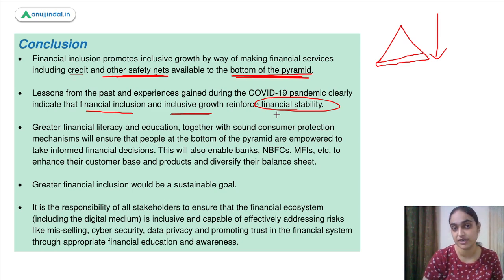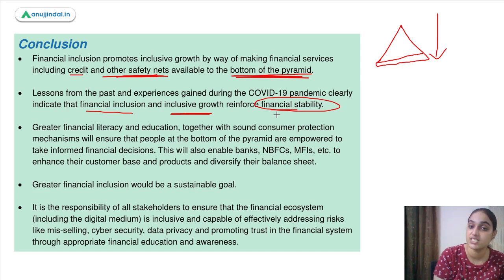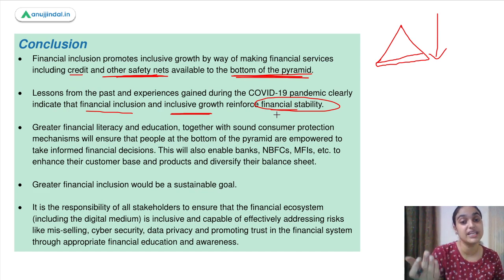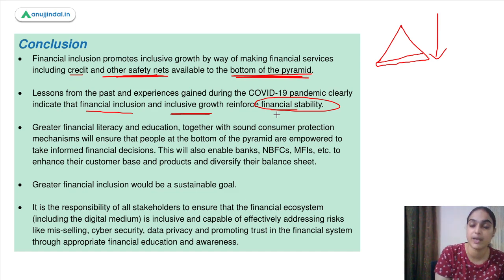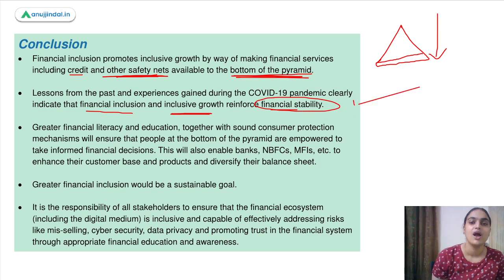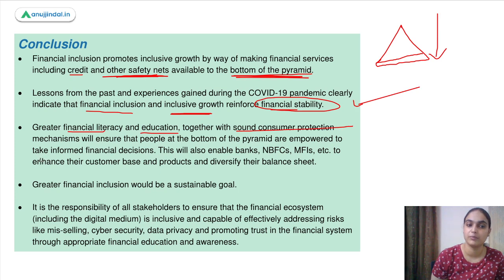The recently released Financial Stability Report also shows that because of RBI and government support, we have remained financially stable. The pandemic's impact on financial stability has not been as severe as it might have been otherwise. Financial inclusion steps ensure our financial stability and are very helpful. Greater financial literacy and education, together with sound consumer protection, will ensure people at the bottom of the pyramid are empowered to take informed financial decisions.